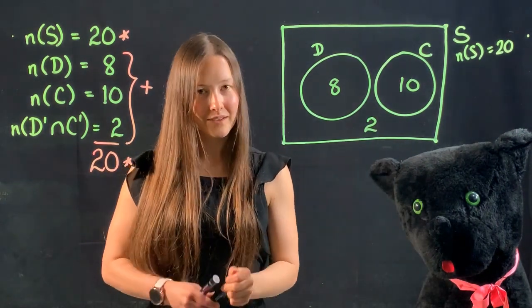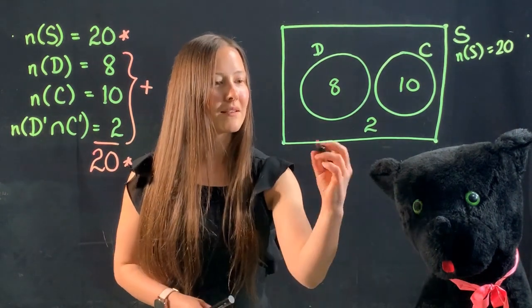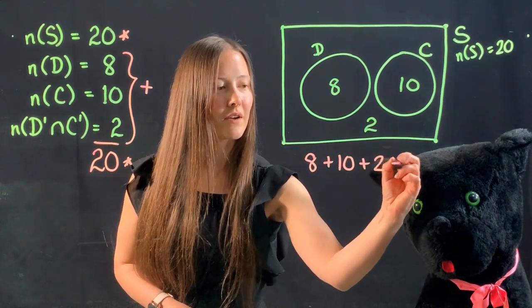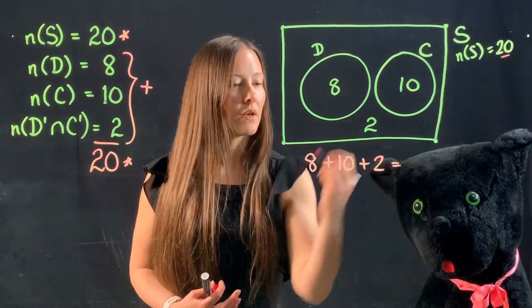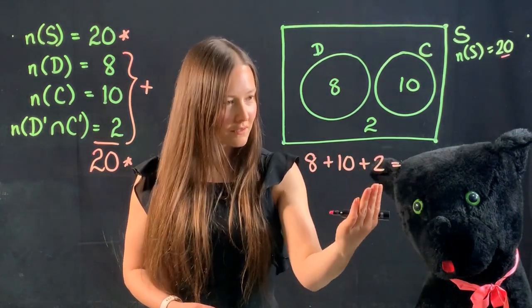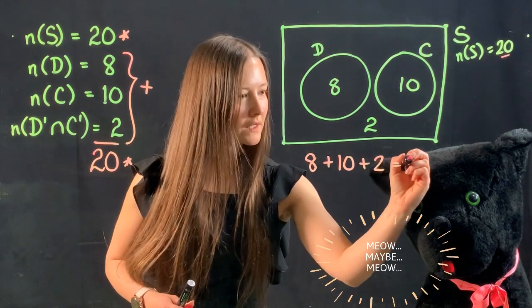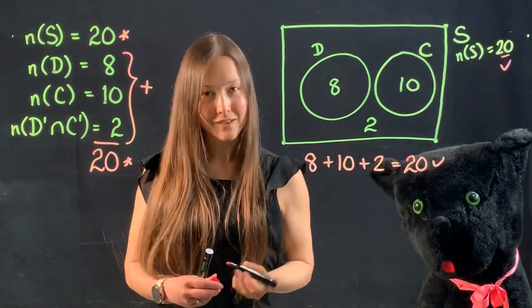And as a final check, this will be helpful when you're looking at more complicated examples, is to confirm. Do all of those numbers inside the Venn diagram equal what you're expecting for the total. So eight plus 10 plus two. Does that work out? Yes, it is 20. So that works out.